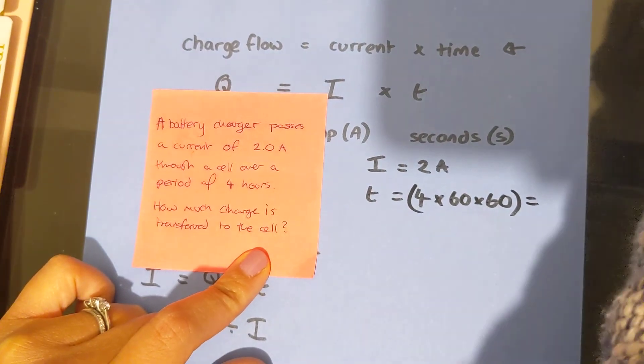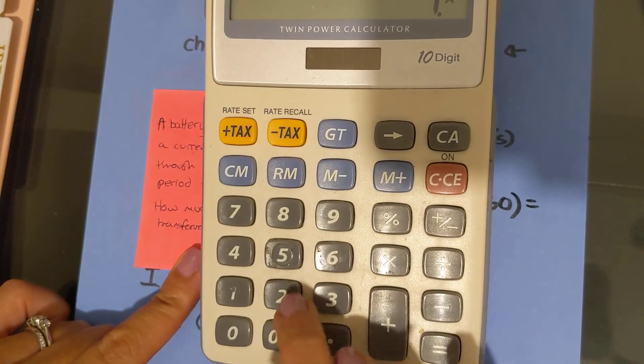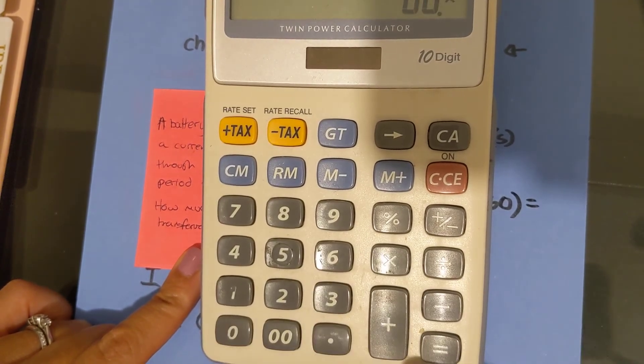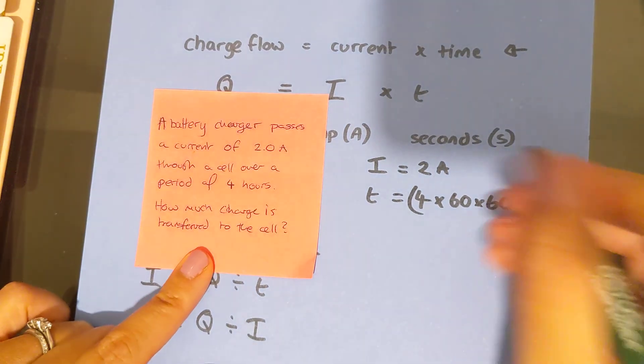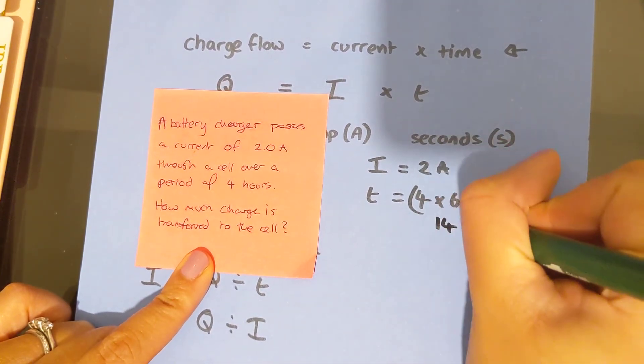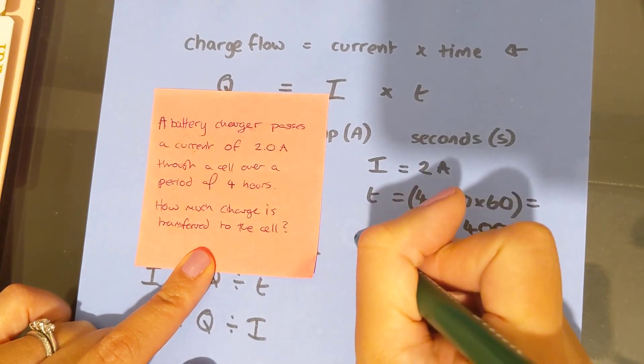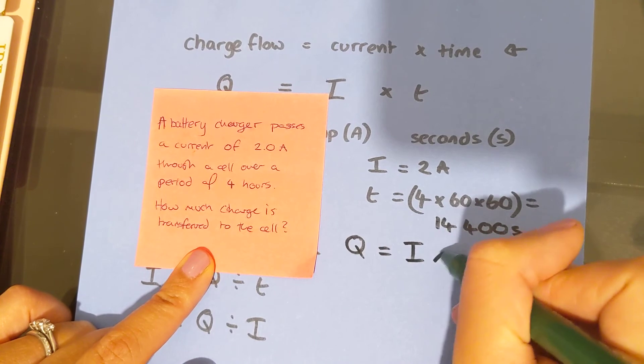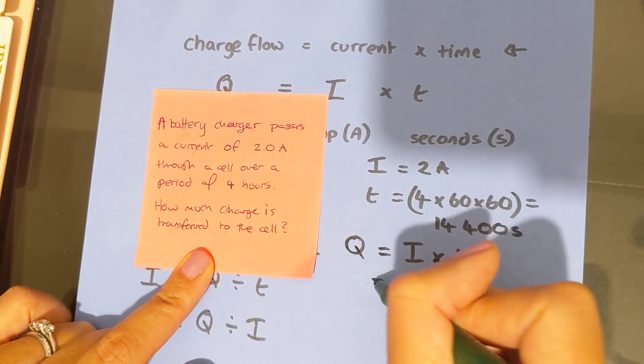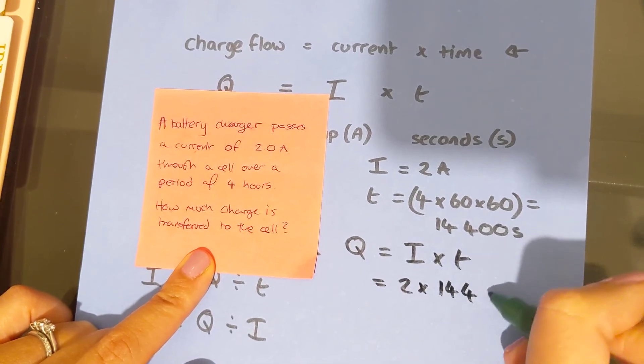So let's just work that out now. So four times 60 times 60 is 14,400 seconds. So charge flow equals current times time, which equals two multiplied by 14,400.